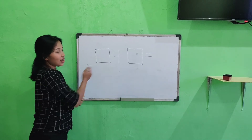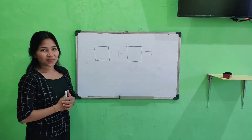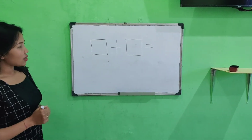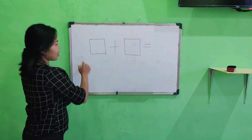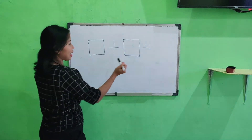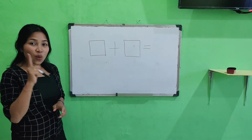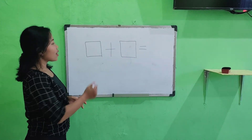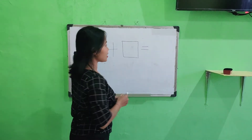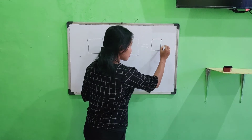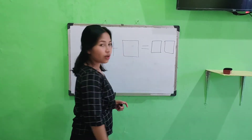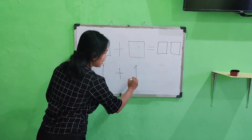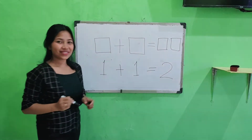Okay, look at here. Do you still remember what is this? Yes, square. This is square. Now, let's count all this square. Here, Nisema has one square. And here, Nisema has one square more. How many square? Let's count together. One, two. Yes, two square. So, one plus one equal two.